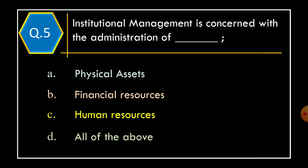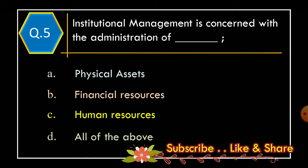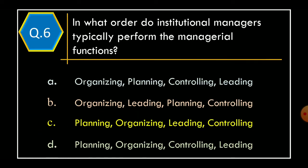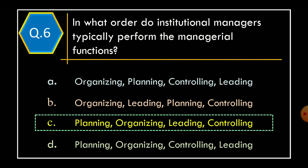Question 5. In what order do institutional managers typically perform the managerial functions? Option A: Organizing, planning, controlling, leading. Option B: Organizing, leading, planning, controlling. Option C: Planning, organizing, leading, controlling. Option D: Planning, organizing, controlling, leading. The correct option is Option C: Planning, organizing, leading, controlling.